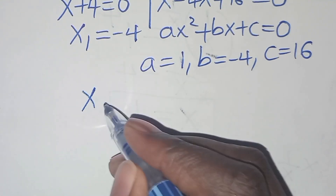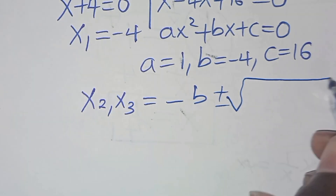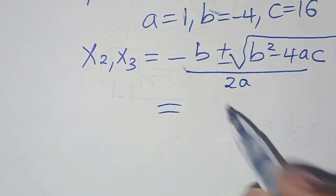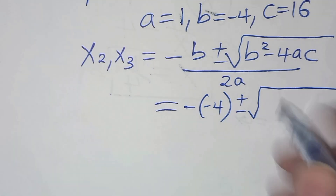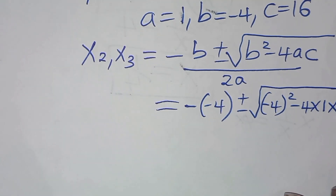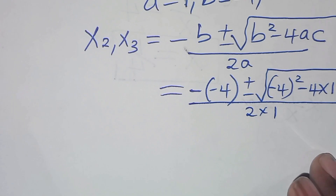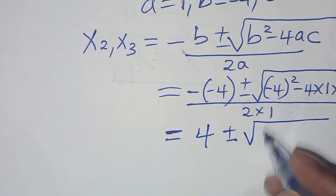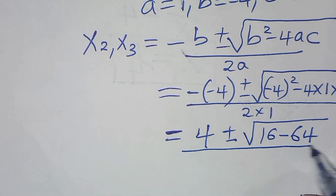To find x₂ and x₃, we apply the quadratic formula: (−b ± √(b² − 4ac)) / 2a. Substituting: (−(−4) ± √((−4)² − 4 × 1 × 16)) / (2 × 1), which gives 4 ± √(16 − 64) / 2.